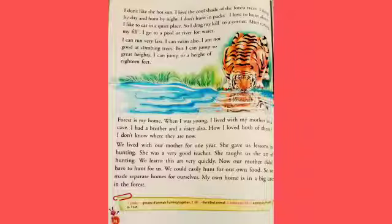I drag my kill to a corner — drag means to pull something. He kills his prey and takes it to a corner, a quiet place to eat. After eating my fill, I go to a pool or river for water. After the tiger has eaten enough, he drinks water and goes to the river.